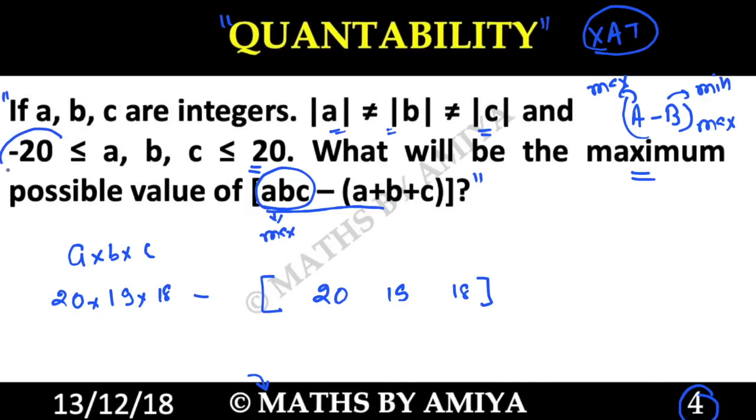But here we can use negative values too. So we can say minus 20, minus 19, or any two of them can be given minus value. Why only two values are minus? Because minus and minus becomes plus.